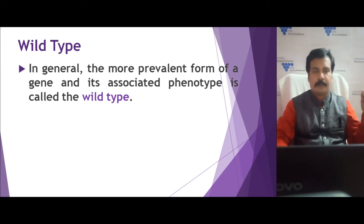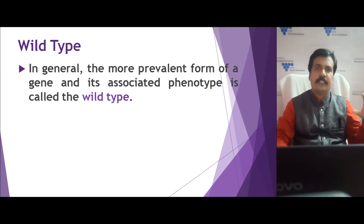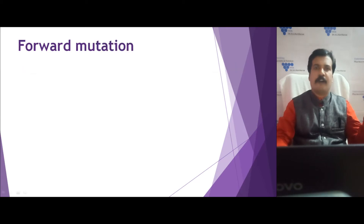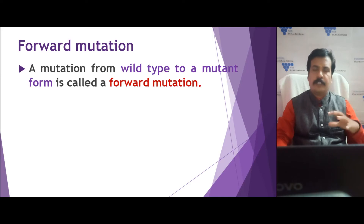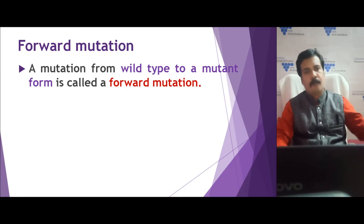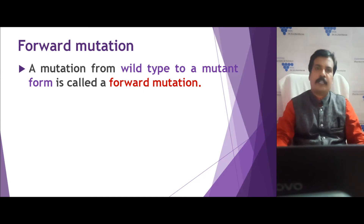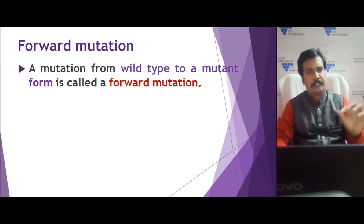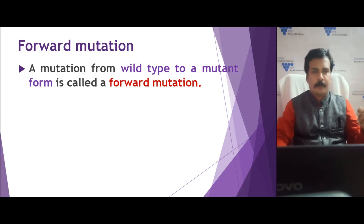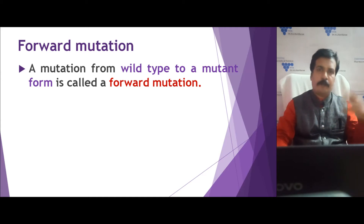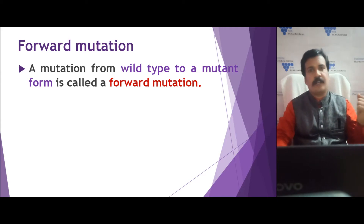These changes can occur in different ways. One is forward mutation. In forward mutation, a wild type is converted into a mutant form by an alteration in the gene structure through a point mutation. We will discuss how point mutation occurs elaborately in the next lecture.